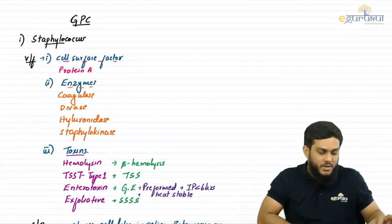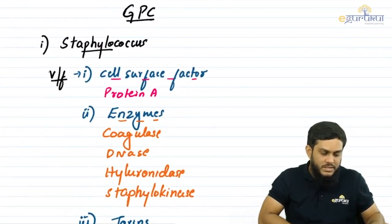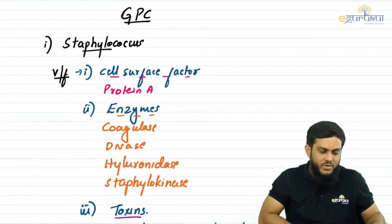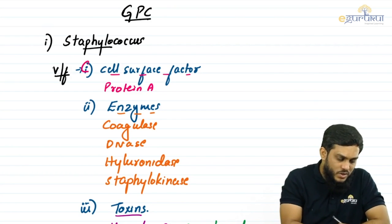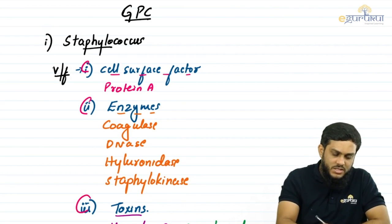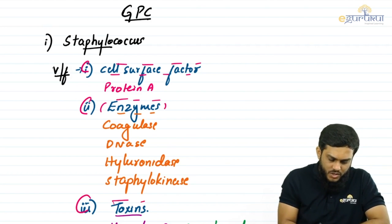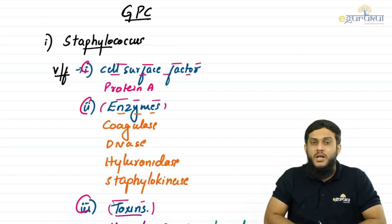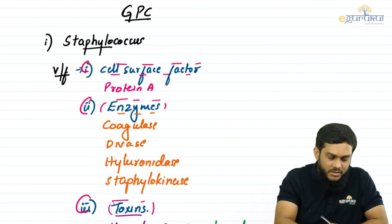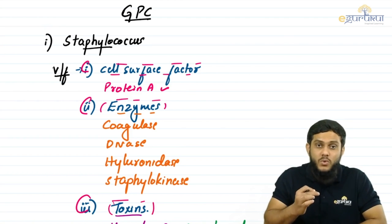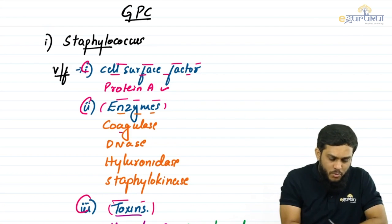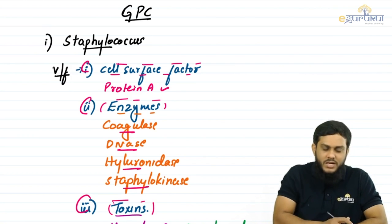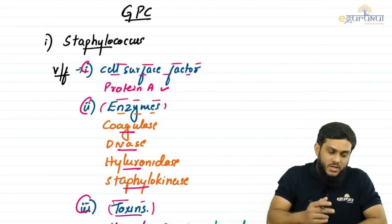The first important gram positive coccus is staphylococcus. Staphylococcus has three important virulence factors: cell surface factors, enzymes, and toxins. The one important cell surface factor is protein A, which is anti-phagocytic — it prevents the bacteria from phagocytosis. The four important enzymes are coagulase, DNase, hyaluronidase, and staphylokinase.